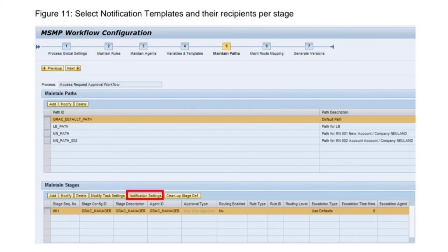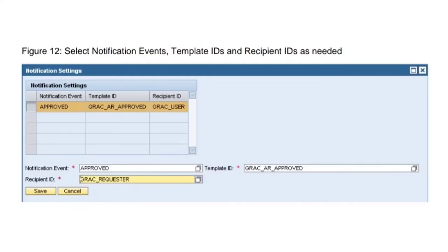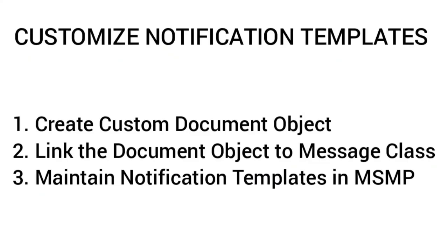To trigger notification templates at a stage level, select the work process, navigate to Step 5, select the path, then select the particular stage, and click on Notification Settings. In the notification settings, you can add the notification event and the template ID along with the recipient. For example, the 'Approved' notification event triggers when a request is approved — the template ID can be standard or the custom one you created, and the recipient specifies who should receive it. This is how custom notification messages are created and used in MSMP workflows.